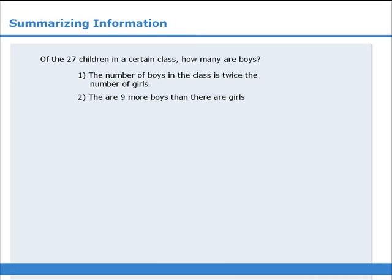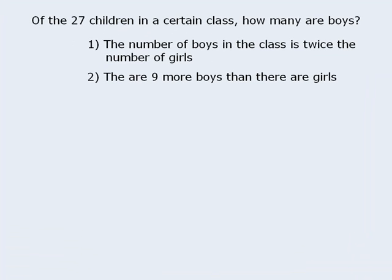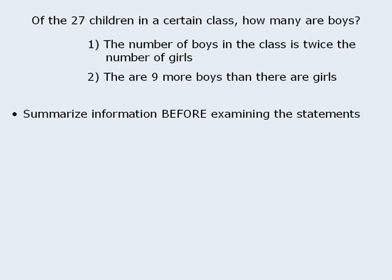In this lesson, we will examine a useful strategy to consider when tackling data-sufficiency questions. As you may know, some data-sufficiency questions provide useful information in addition to posing a question. In this example, the target question asks us to determine the number of boys in a certain class, but we are also given some information about the class — it has 27 children. In cases where additional information is provided, it is often useful to summarize the information before examining the statements.